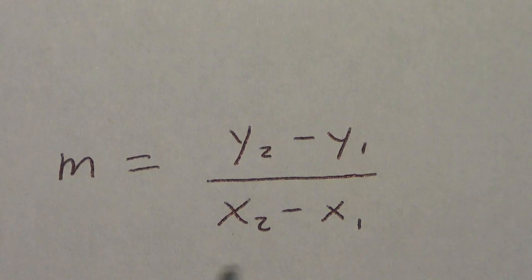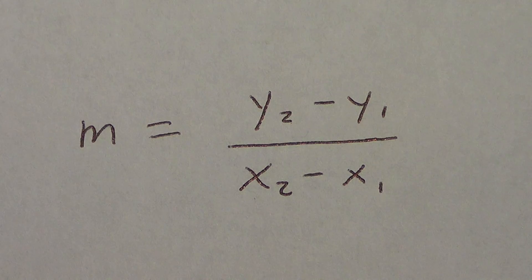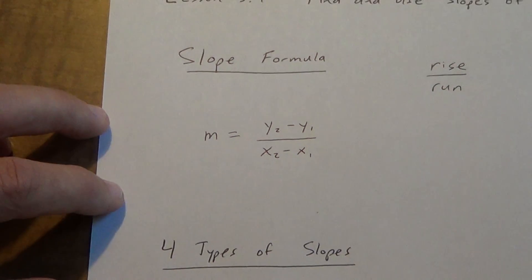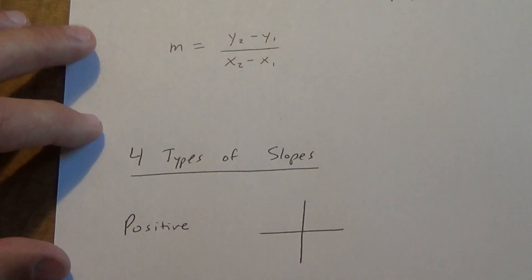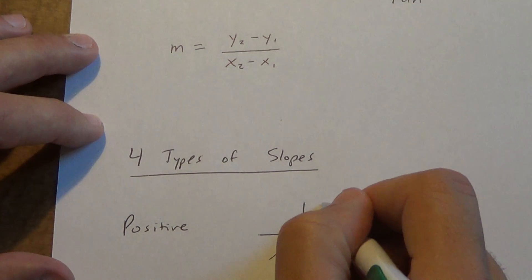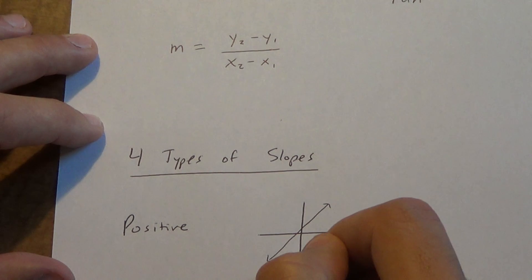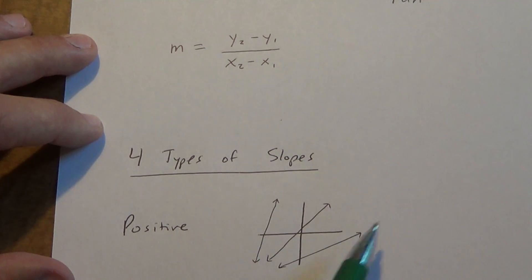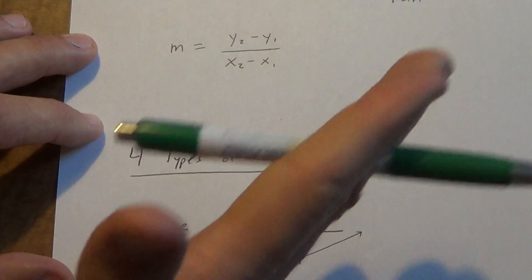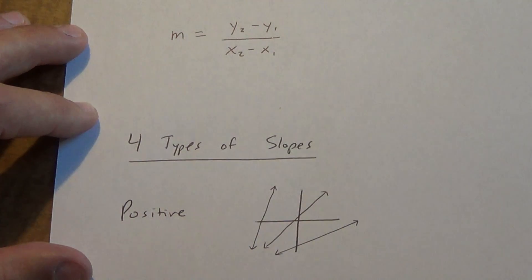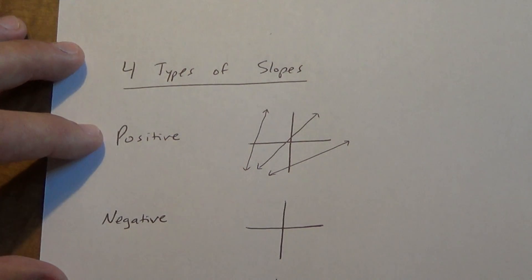Make sure you memorize this formula — if you don't have it memorized you won't be able to find slope. There are four different types of slopes you might get. The first one is a positive slope, which is always going up to the right. It could be gradual or really steep, but as we move to the right we're moving up.